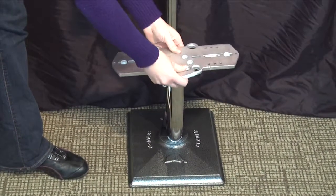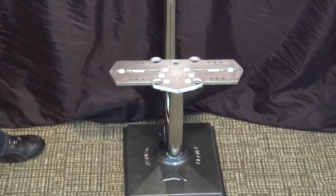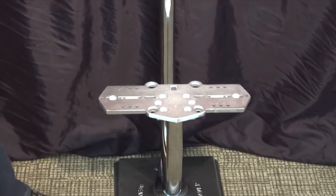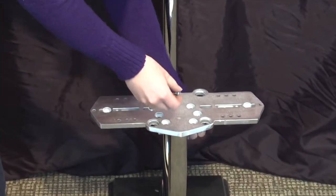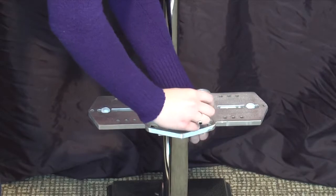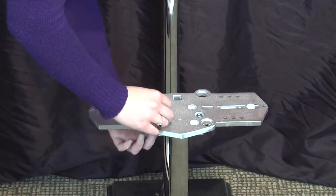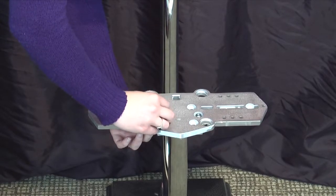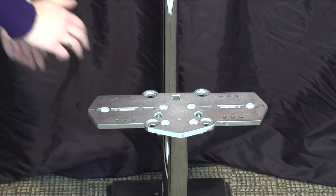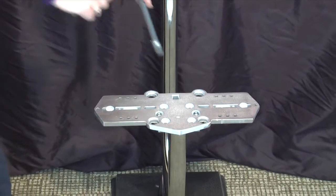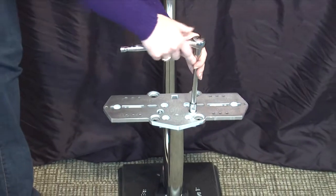Place the double bar on the lower level of the stand, making sure that the arrow points forward. Secure using the nuts and bolts provided. Tighten using your socket wrench.